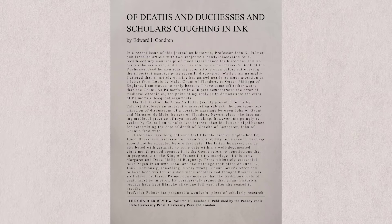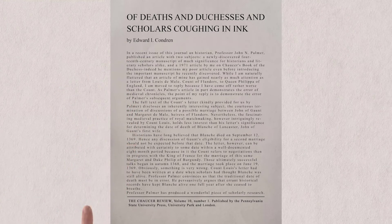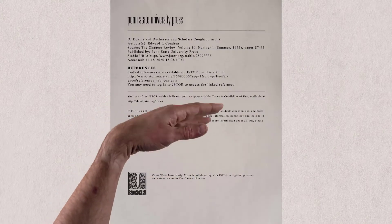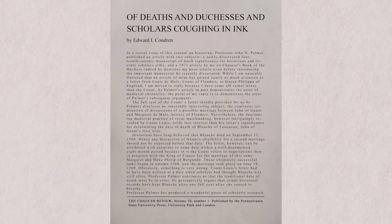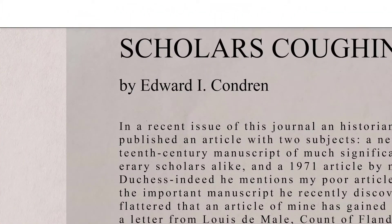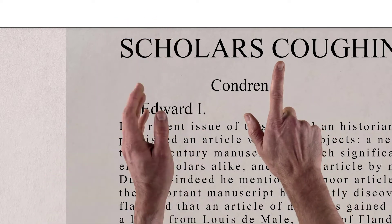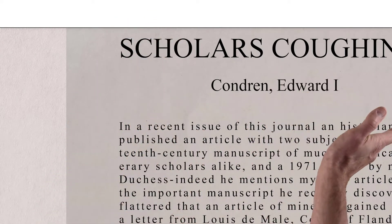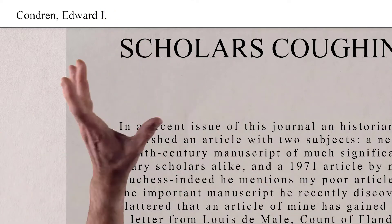We start with the author. That's usually somewhere around the top of the article, and if you got it from a database, there'll be more information in the place where you downloaded it, or, depending on the database, there might be a helpful information page at the front of the article. The author is Edward I. Condren, but we can't just copy the name right over. MLA requires the author's name to be inverted: Condren, Edward I. And we only have one author, so we add a period to indicate this part's done.